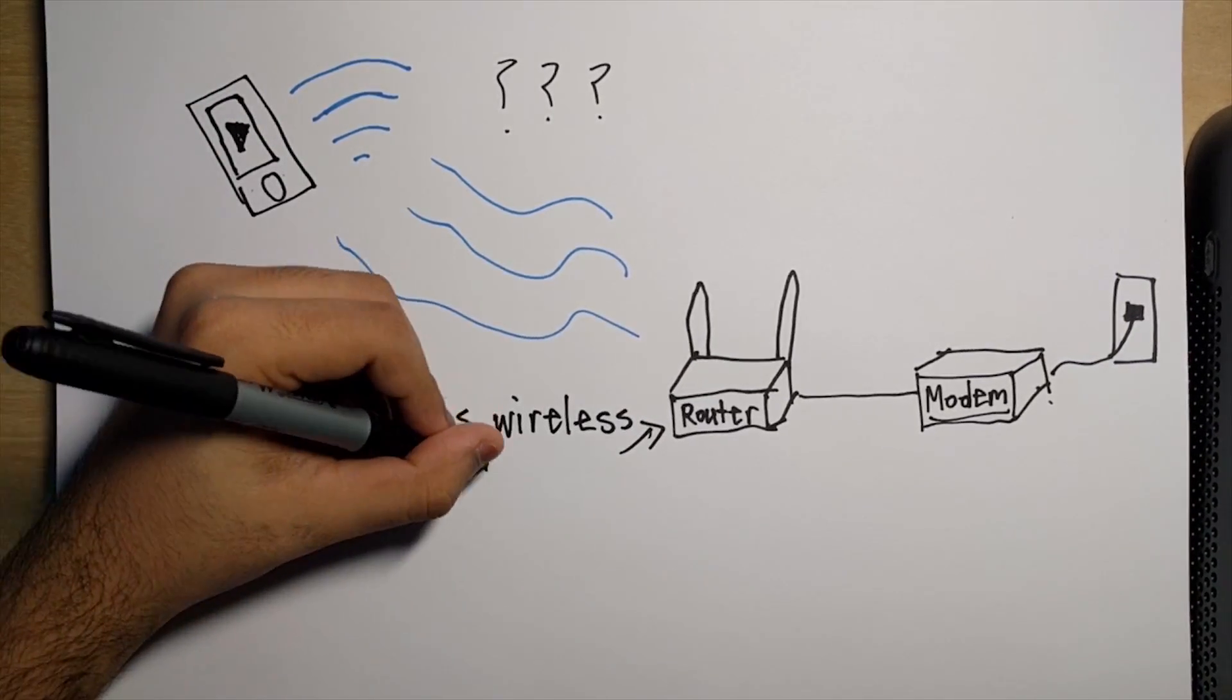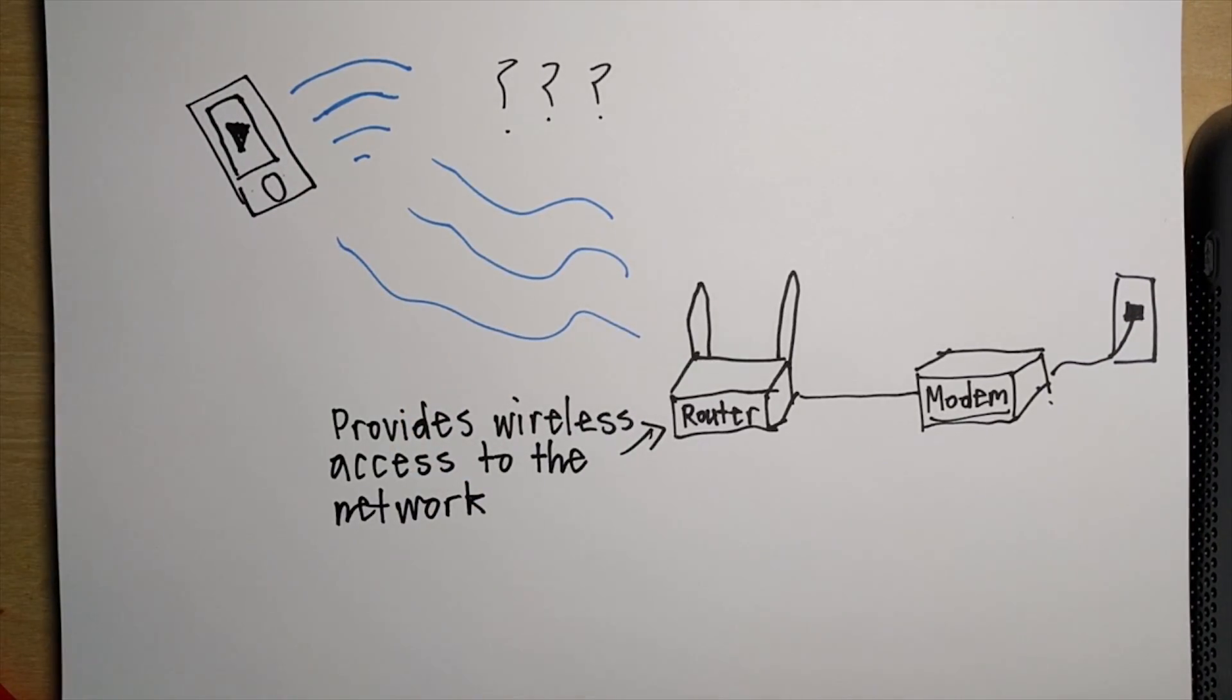Now if we had two devices on the same network, how would the router know what information comes and goes from what? Well, once again, that is through the IP address, which is packaged with every piece of data you send.